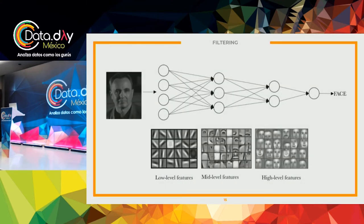A low-level filter is something simple like a line. As you stack these filters on top of each other, all these lines start to make shapes together, and you can pull out things like eyeballs and eyebrows. Then you stack all of those on top of each other and you can pull out things like faces. It's this continual stacking to pull out features so that the computer understands what it is even looking for. If it's looking for faces, it knows to look for these particular things in your image.